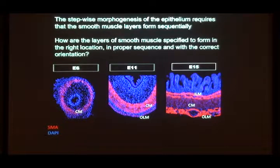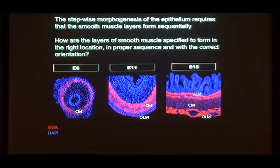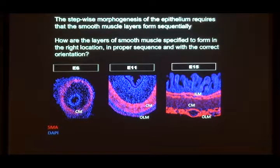The first story I want to tell you is how, if you're going to build a gut, do you get the muscle layers in the right place with the right orientation? An anatomy textbook will tell you that you have these different layers oriented in different directions, and I've said it's very important that they be there — but how do you get them there in the first place?